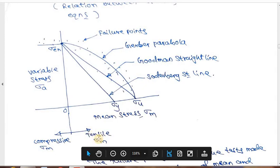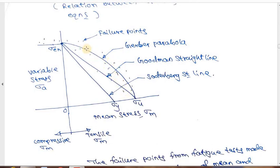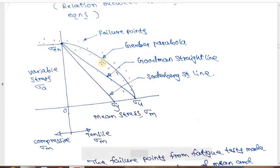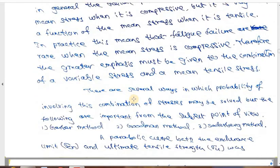On the right-hand side we indicate the tensile sigma_u and on the left side the compressive sigma_u. The dots shown on the graph are experimental failure points — when the specimen is subjected to failure, noting down the variable stress and mean stress and plotting them gives these data points. When the mean stress sigma_m is compressive, the failure is hardly affected by sigma_u and remains approximately constant. When the mean stress is tensile, the experimental points lie around the Gerber parabola.